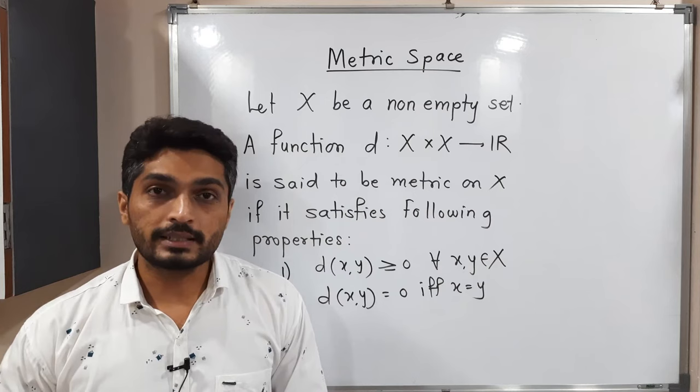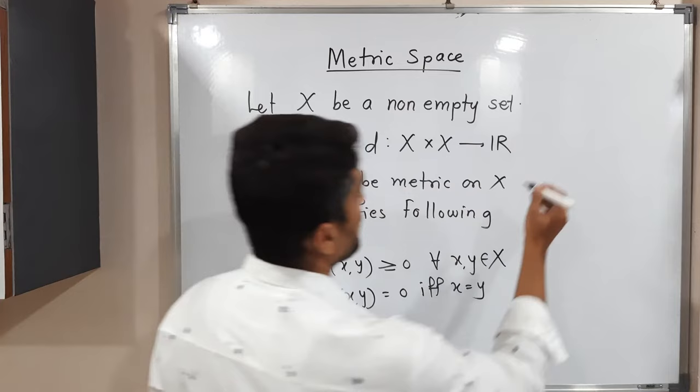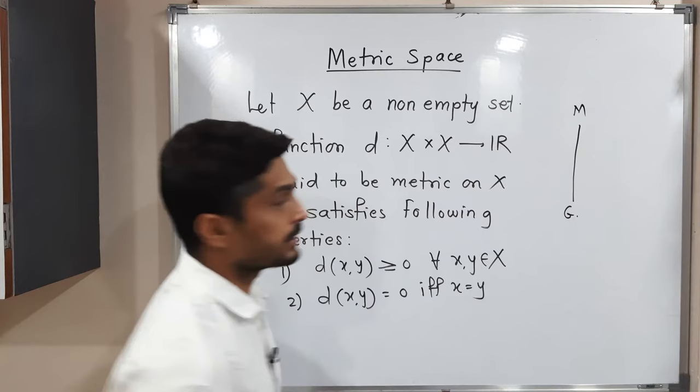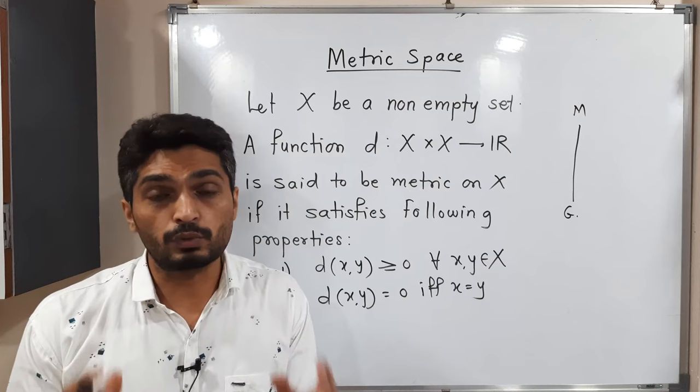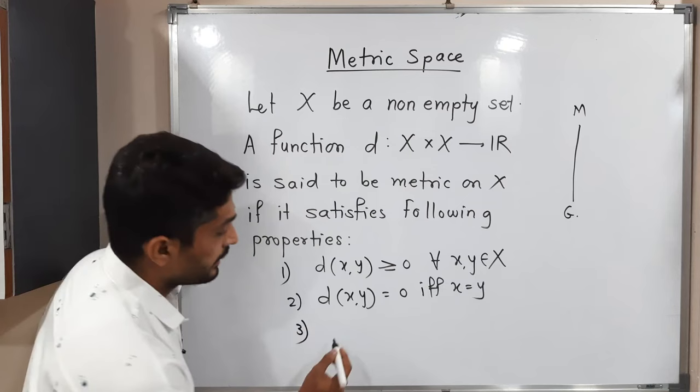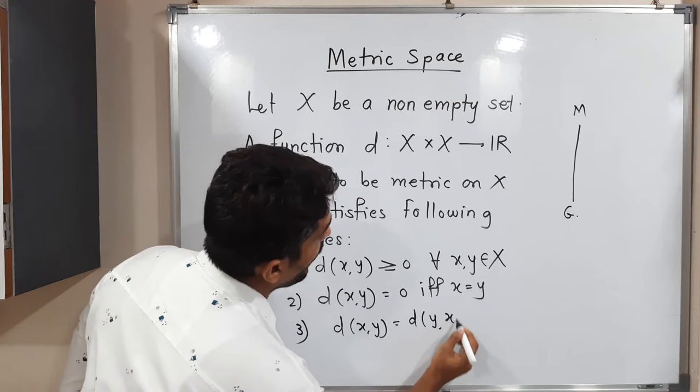The third property is also obvious. Consider any two cities — suppose Mumbai and Goa. The distance from Mumbai to Goa is the same as the distance from Goa to Mumbai. So if you consider it in the reverse direction, the distance is the same. Our third property states: distance between X and Y is the same as distance between Y and X, for all X, Y belonging to X.